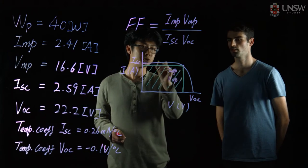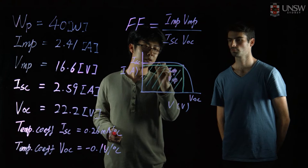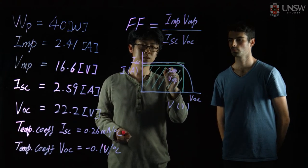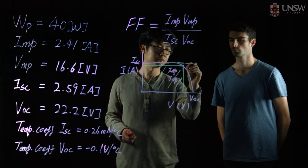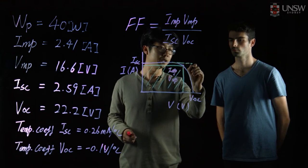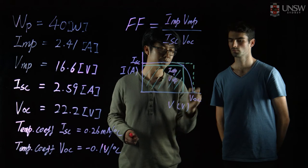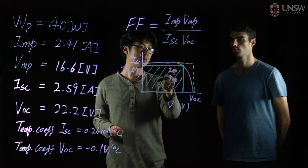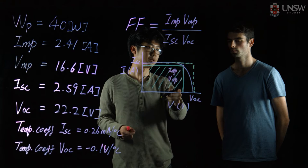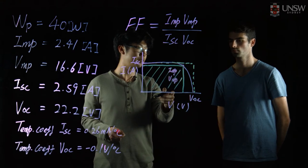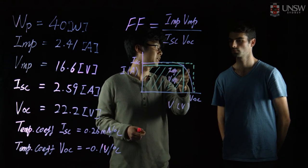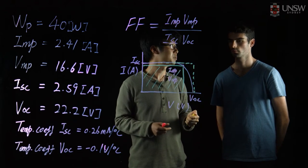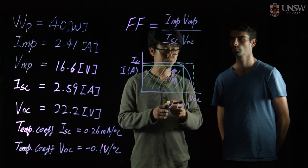We also have a virtual rectangle here, which is the product of the short circuit current and open circuit voltage. You're looking at a ratio of the area underneath the maximum power point curve over this dotted rectangle. To find the fill factor, we simply substitute the values.